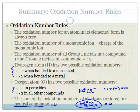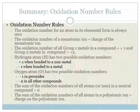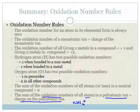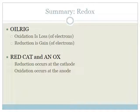Finally, the sum of the oxidation numbers of all the atoms in a polyatomic ion equals the charge on the polyatomic ion. For example, in NH₄⁺, the sum of all charges on nitrogen and the hydrogens must equal plus one. And for redox: remember OIL RIG — oxidation is loss of electrons, reduction is gain. Also remember RED CAT and ANOX — reduction occurs at the cathode, and oxidation occurs at the anode.